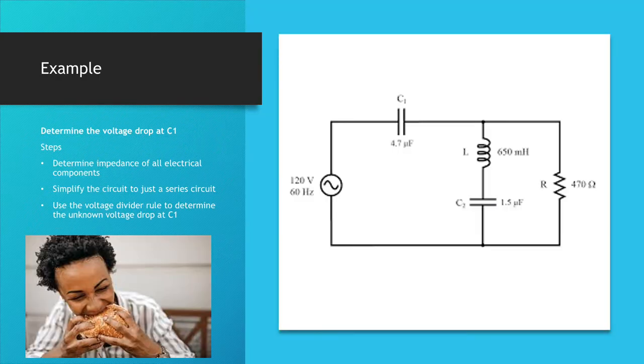Now looking at an example, we're going to determine the voltage drop at C1, the capacitor 1. The steps that we're going to take is that we're going to determine the impedance of all electrical components, simplify the circuit into a series circuit, and use the voltage divider rule to determine the unknown voltage drop at C1.